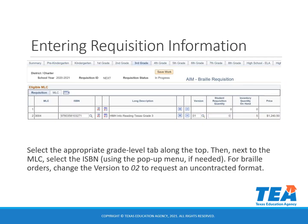Use the arrows along the top to scroll left or right and find the needed grade level tab for K–8 materials, or the subject tab for high school materials. In this example we've selected the third grade tab. Then click on the magnifying glass icon next to the needed multiple list code, or MLC, to select the title from the pop-up menu.